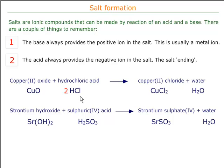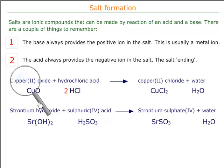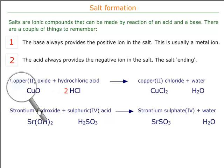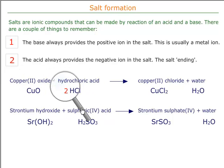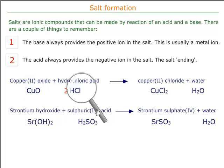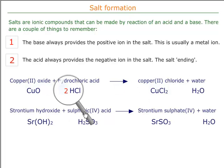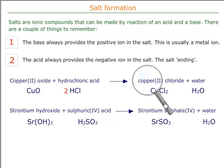In the first example here, we've got a base which is copper oxide. The base is going to provide the metal ion for the ionic compound. Copper oxide — copper is the metal ion, the positive ion, so that's going to go into the salt. This is reacting with hydrochloric acid, and hydrochloric acid is going to provide the negative ion. The negative ions in hydrochloric acid are the chloride ions, so that gives us copper chloride. The formula of copper chloride is CuCl₂, so we actually need to balance with two hydrochloric acids to balance the equation. The Cu²⁺ comes from the base, and the chloride comes from the acid.